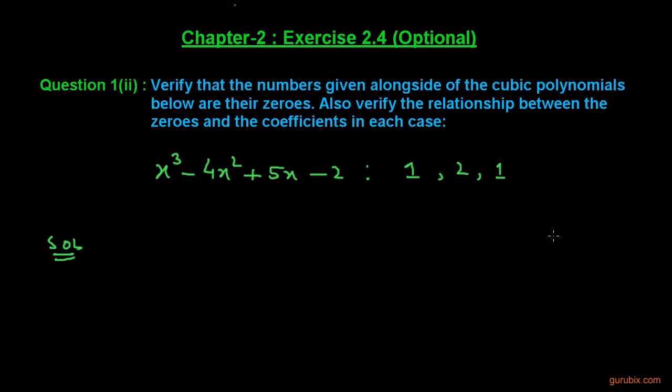Welcome friends. Here is the second part of question number one of exercise 2.4 of chapter 2. The question says: verify that the numbers given alongside the cubic polynomial are the zeros, and also verify the relationship between the zeros and the coefficients. The given polynomial is x³ minus 4x² plus 5x minus 2, and the numbers are 1, 2, and 1.